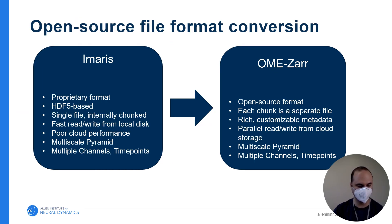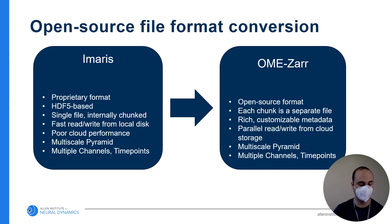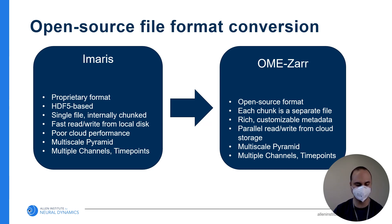So why do we choose OME-Zarr? To enable open access to our imaging data, we want to store all of our data in cloud storage providers such as AWS S3 and Google Cloud Storage. This means choosing a file format that can be read from and written to the cloud in parallel. On local storage, we store image data in the OMERS format, which is designed to store multiple channels, time points, and resolution levels in a single file, enabling high-performance visualization of very large images on a personal workstation. But the drawback of this format is that it is proprietary and designed around the commercial OMERS software suite. Since open science is critical to our mission at AIND, we wanted to standardize around a format that is open source and integrated with other open source tools in the scientific software ecosystem.